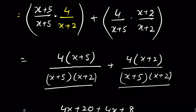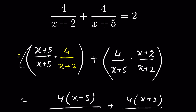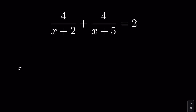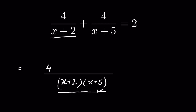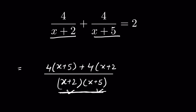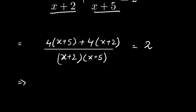All these steps can be skipped with a shortcut: multiply the two denominators and write them together as (x+2)(x+5). Then divide the common denominator by (x+2) to get (x+5) and multiply 4 by (x+5). Next, divide by (x+5) to get (x+2) and multiply 4 by (x+2). So the numerator is 4(x+5) plus 4(x+2), which expands to 4x+20 plus 4x+8.